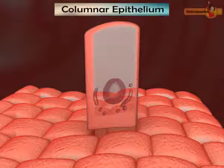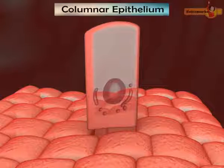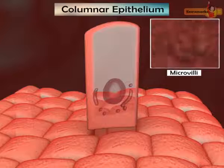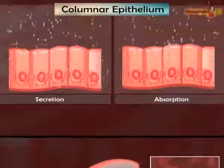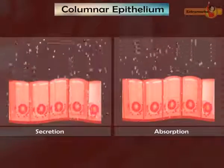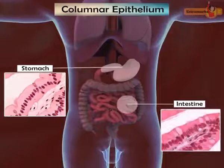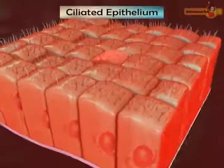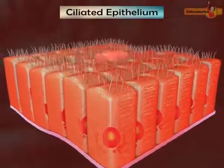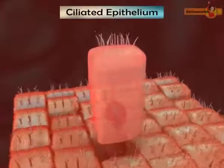Columnar epithelium is composed of a single layer of tall and slender cells resting on the basement membrane, with a spherical nucleus at the base of each cell. The free surface of the columnar cells may have microvilli. Columnar epithelium helps in secretion and absorption; thus these tissues are found in the inner lining of the stomach and intestine.